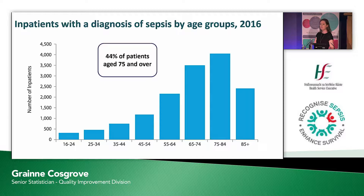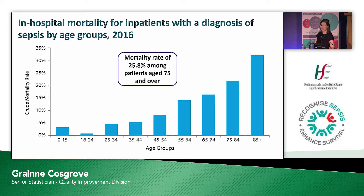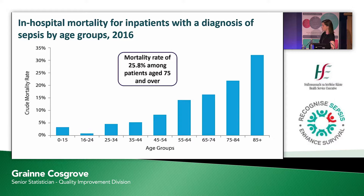Looking at the characteristics of inpatients with the diagnosis of sepsis in 2016: as you'd expect, the numbers increase with age. The age group with the highest number of cases is the 75 to 84 year olds. In total, 44% of patients in 2016 with sepsis were aged 75 and over — really important to note in the context of an ageing population. The mortality rate rises with age groups: patients aged 16 to 24 had the lowest mortality rate and patients aged 85 and over had the highest. The group aged 75 and over had an overall mortality rate of 25.8%, compared to our national rate of 18.3%.